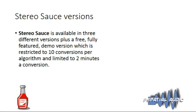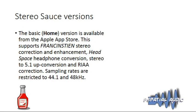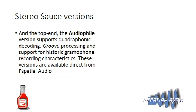Stereo Source comes in three versions plus a free demo version restricted to 10 conversions and two minutes of audio. The basic Home version includes Frankenstein, Headspace, 5.1 up-conversion, and RIAA, with sampling rates restricted to 44.1 and 48 kHz. The Tonmeister version adds Bride of Frankenstein and the microphone processing options — Blumlein Delta and Cross Fours — supporting all sampling rates. The top-end Audiophile version adds Groove processing and all the historic gramophone recording characteristics.